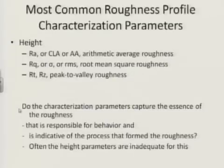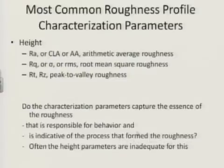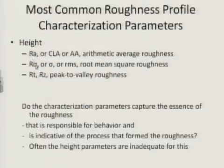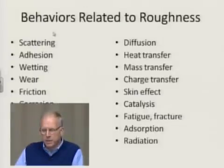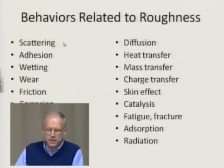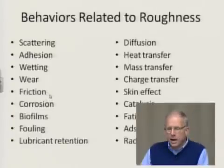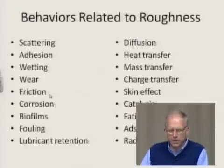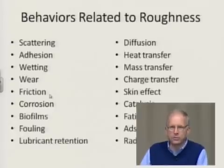One of the things we need to consider in surface roughness analysis is whether the characterization parameters are able to capture the essence of the roughness that's responsible for the behavior and is indicative of the process that formed the roughness. If they are, then we'll be able to do a good job with discrimination and correlation. But often these height parameters are inadequate for this task. There are many behaviors that we suspect or have shown are related to roughness — scattering off a surface, adhesive strength, wetting behavior, wear, friction, corrosion, and others. One of the reasons why we haven't been able to establish these correlations may have been because of inadequacies in the roughness analysis.